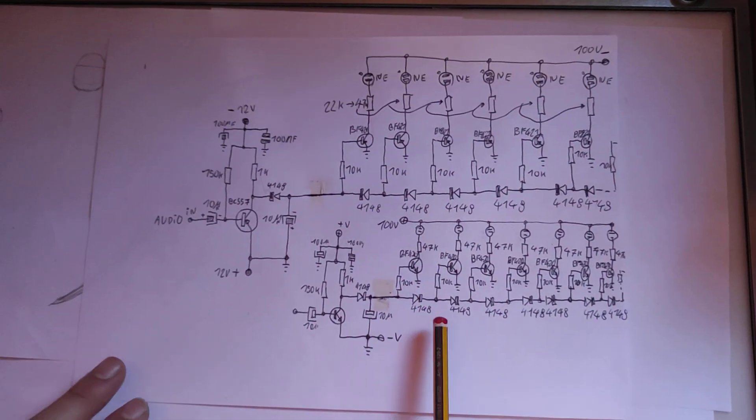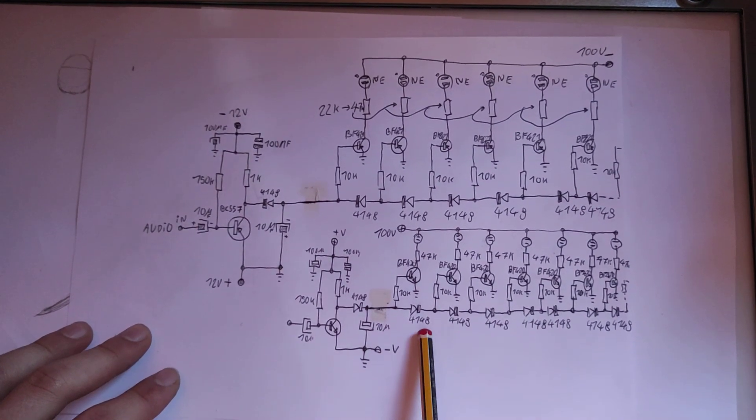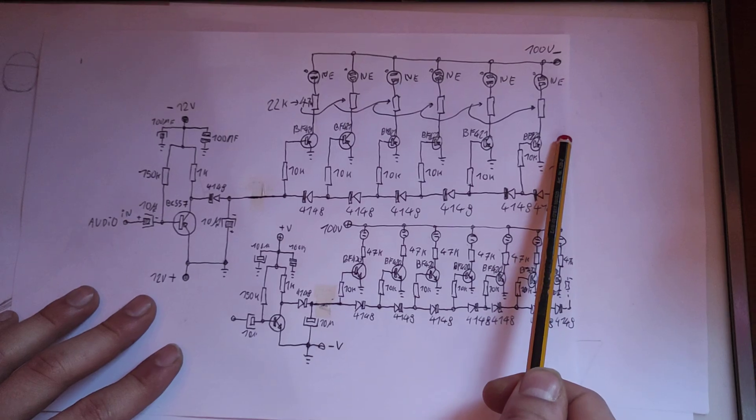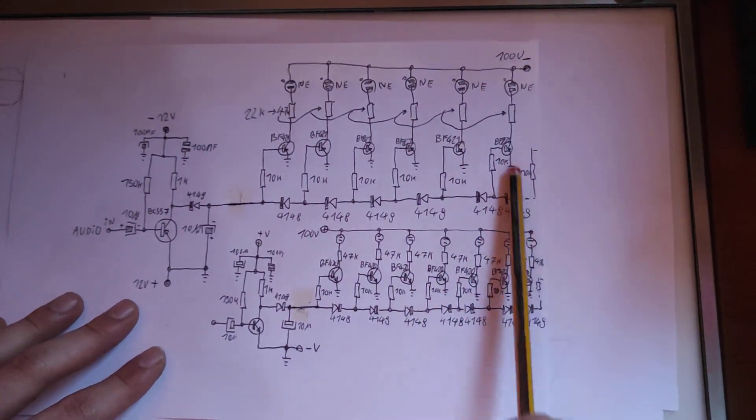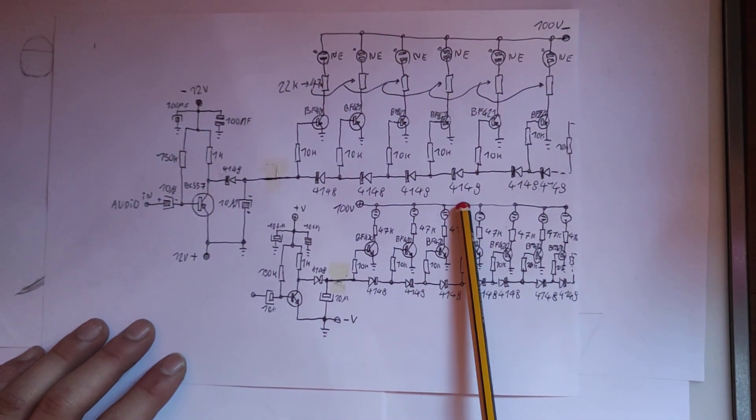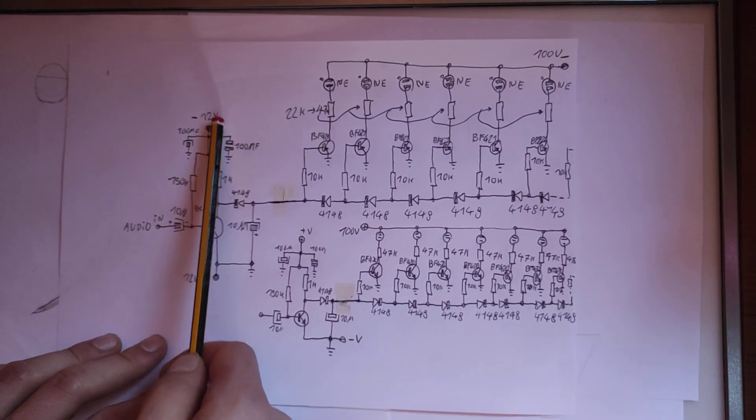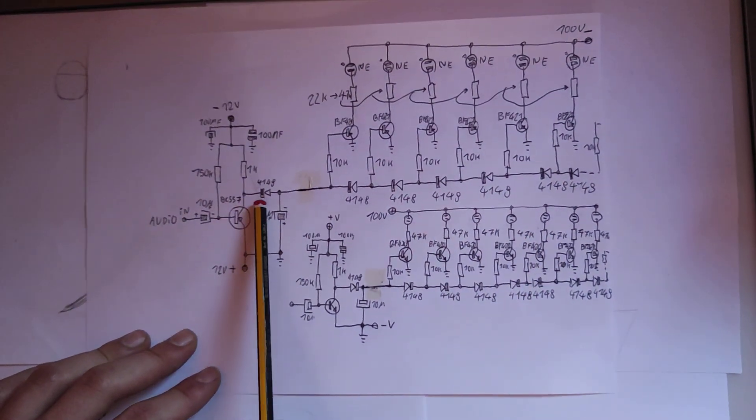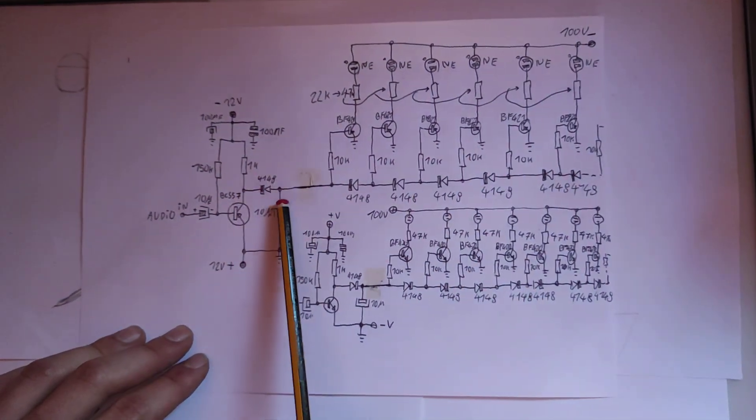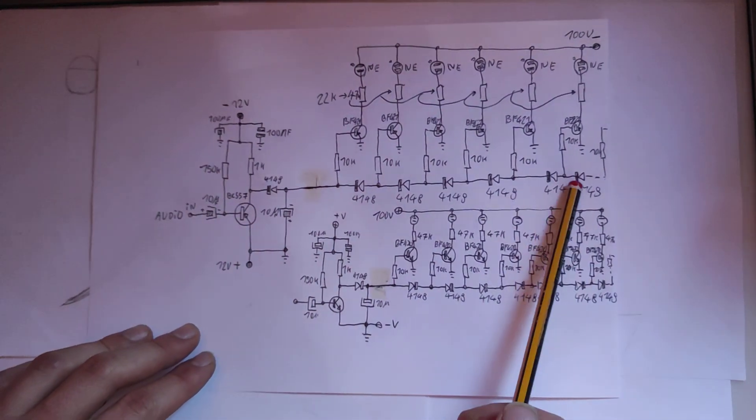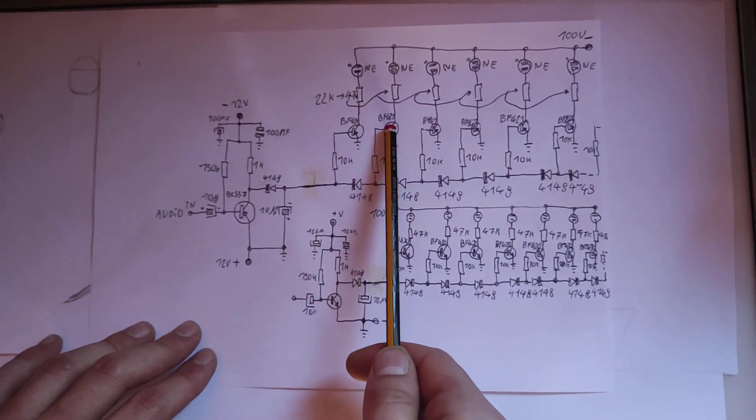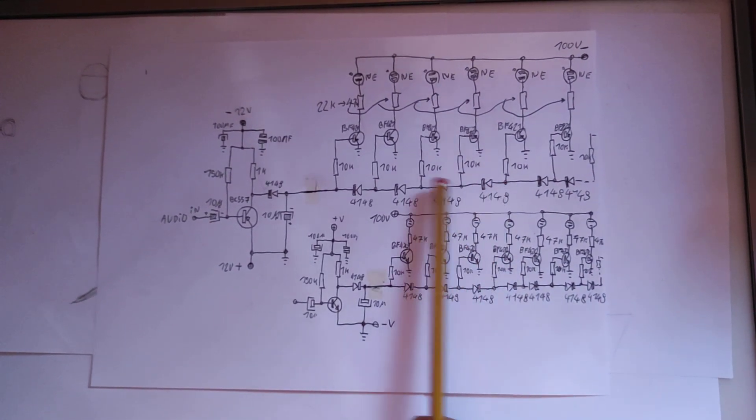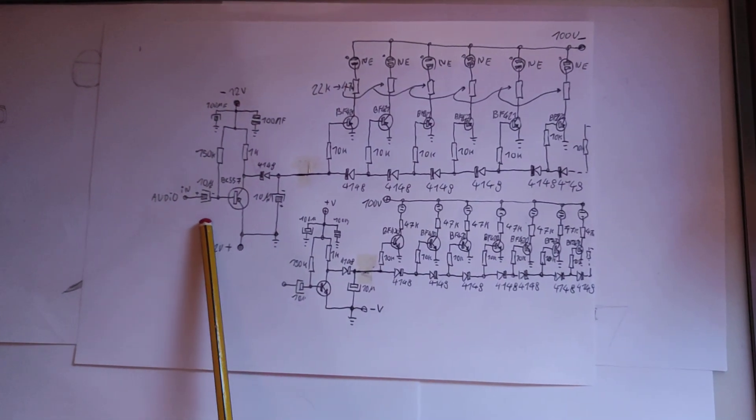These circuits don't really have anything super special going for them. The one thing you might be seeing is that I have 10 neon lamps and only six are drawn here. But you can see the dotted line here. This can keep going. You can keep stacking these stages for almost as many as you want. The only limitation is the supply voltage of the shaping circuit, which in this case is 12V. And each of these diodes drops 0.6V.